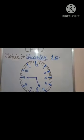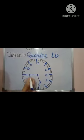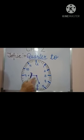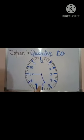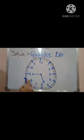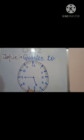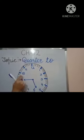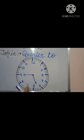In this clock, the long hand is at 9 and the short hand is just a little before 6. That means the time is quarter to 6 — 15 minutes are still left for 6 o'clock.